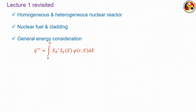The volumetric energy generation can be related by a formula where E_r-prime is the effective energy available from a reaction and phi represents the neutron flux distribution inside the reactor. This is evaluated at a particular location, so the volumetric generation is actually a function of r.